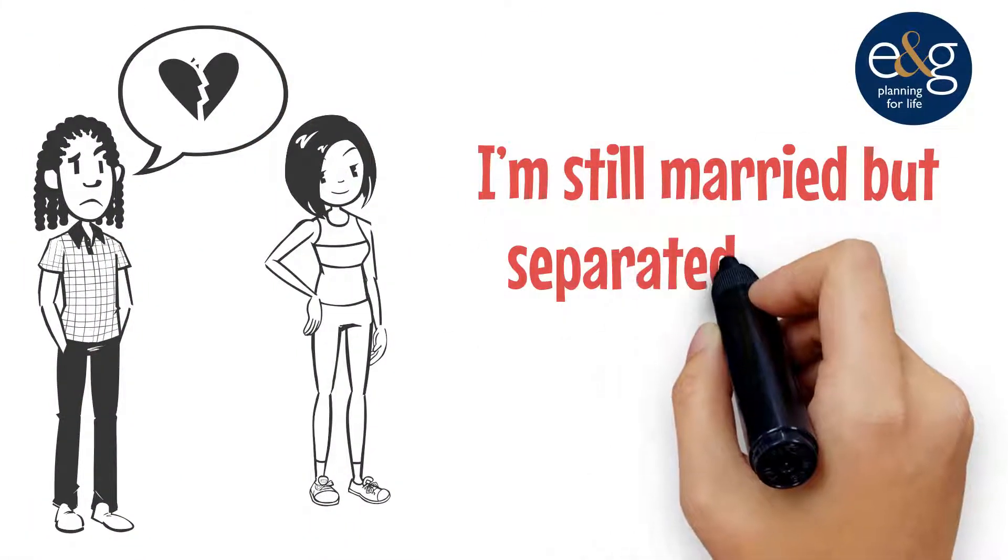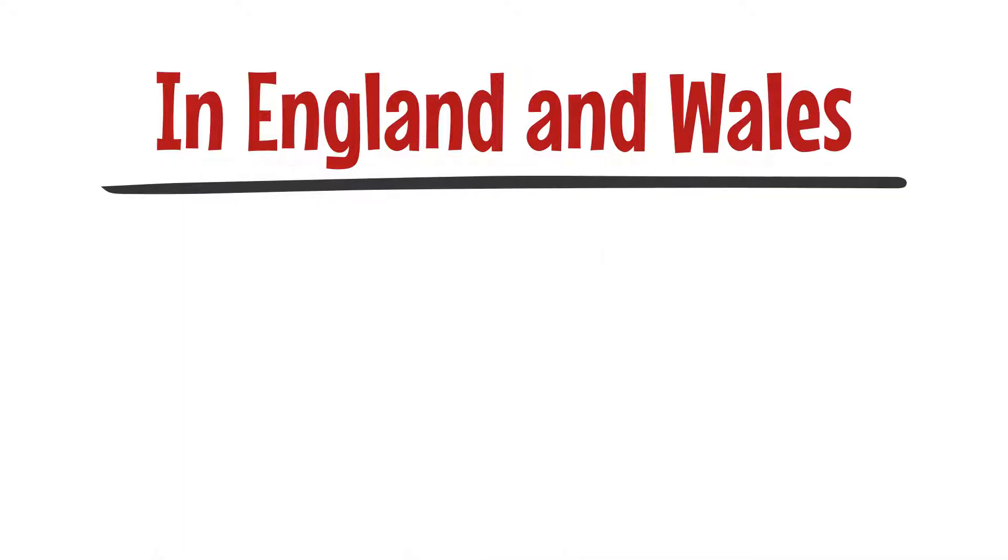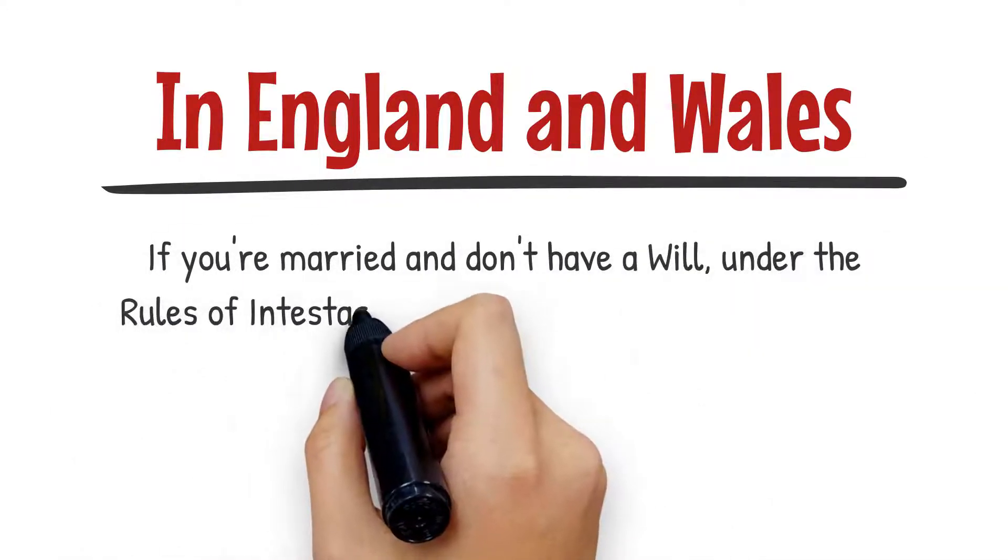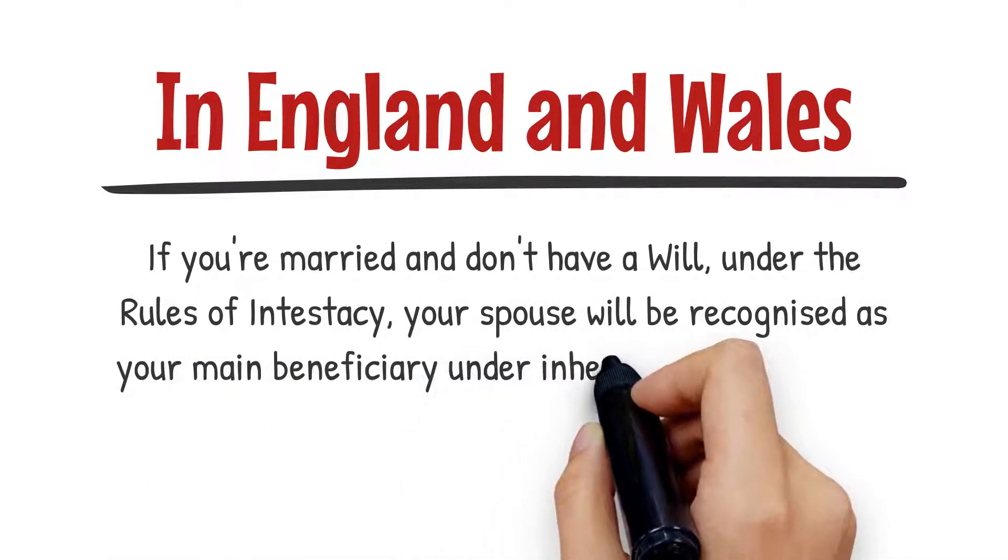I'm still married but separated, can I exclude my spouse from my will? In England and Wales, if you're married and don't have a will, under the rules of intestacy, your spouse will be recognized as your main beneficiary under inheritance laws.